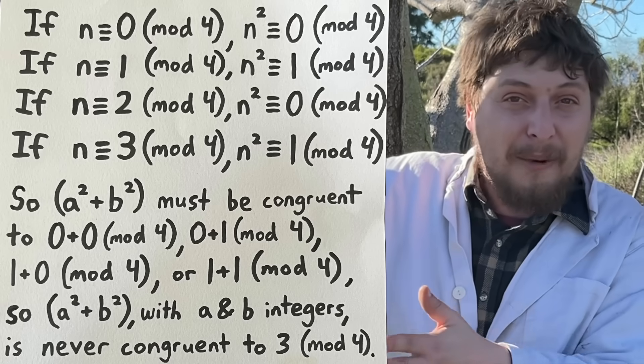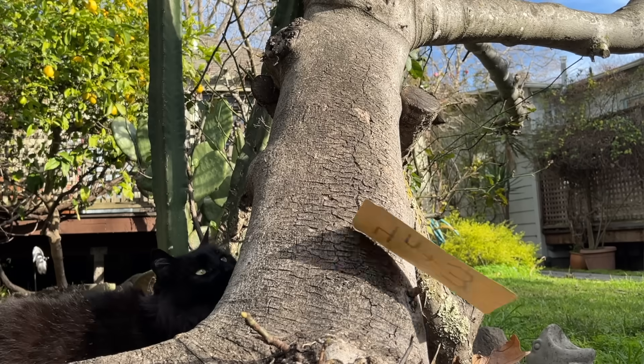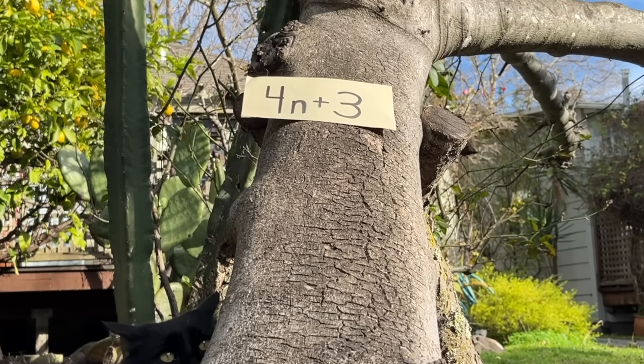or two in mod four. And it's true that if you add up two square numbers, your result will never be exactly three more than a multiple of four.